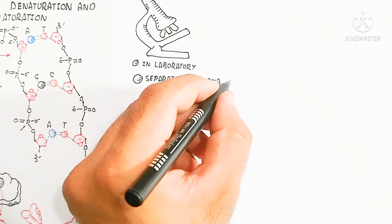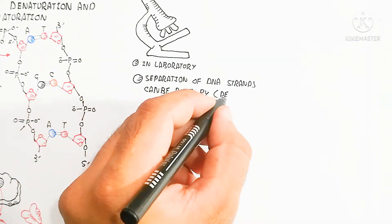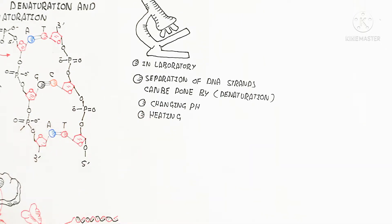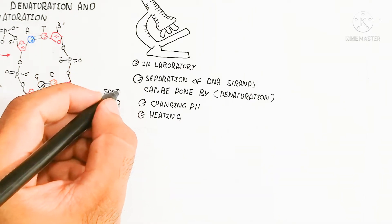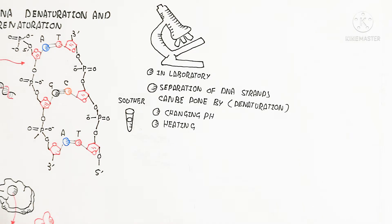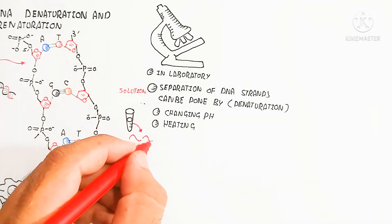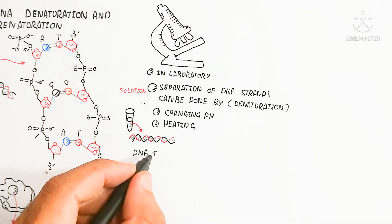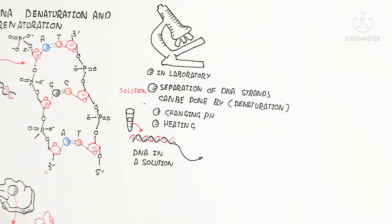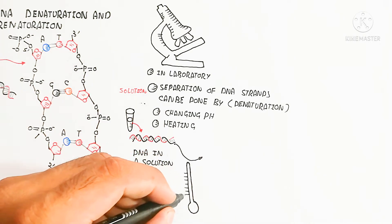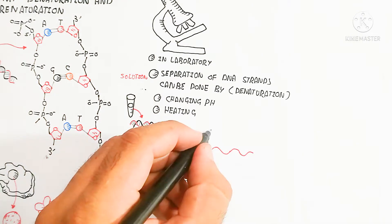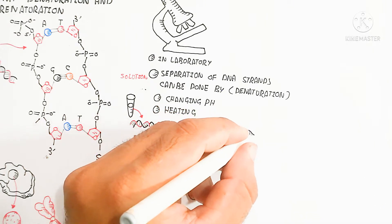Renaturation means the leading and lagging strands are synthesized and become a replicated double-stranded DNA during cell division. In the laboratory, separation of DNA strands is done by denaturation using changes in pH and heating, which causes discomfort of the strand and unwinding. We use a melting curve of DNA to understand denaturation at different temperatures.